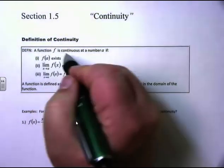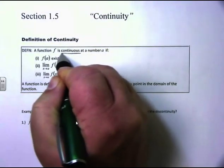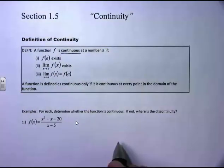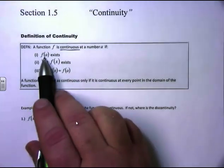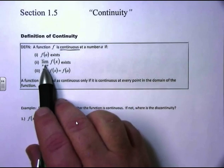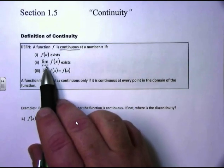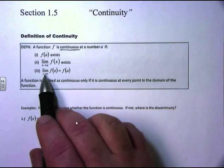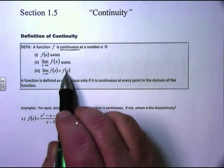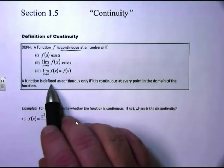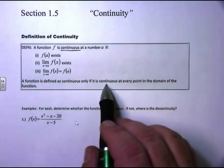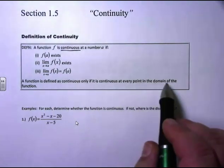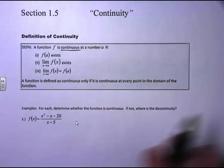A function f of x is continuous at a number a if three things happen. One, f of a exists. Two, the limit as x approaches a of f of x exists. And three, the limit as x approaches a of f of x equals f of a. A function is defined as continuous if and only if it is continuous at every point in the domain of the function.